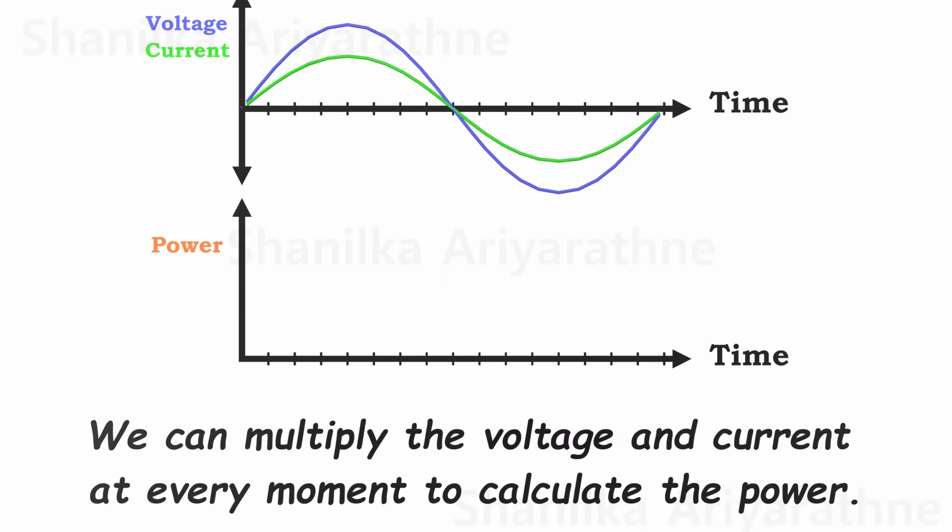We can multiply the voltage and current at every moment, creating a graph of the power. This power graph also oscillates in waves. Keep in mind, even if the voltage or current goes negative, the power is always positive.